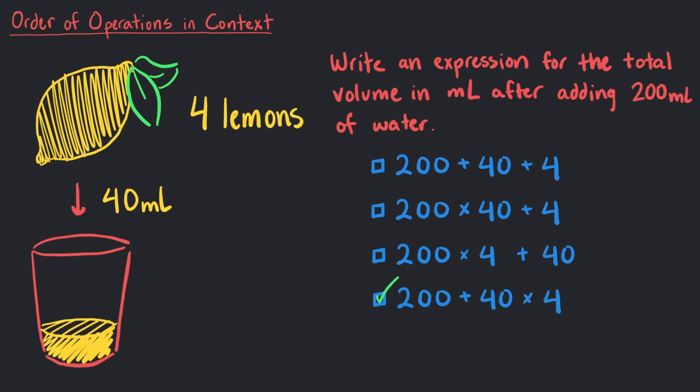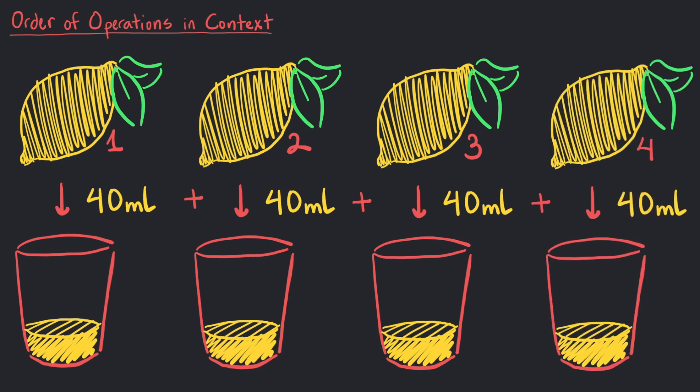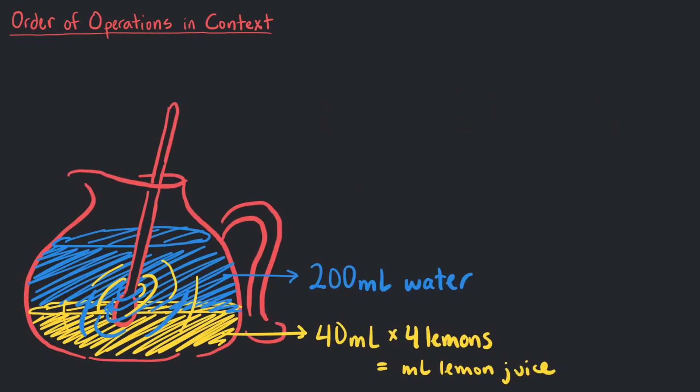That's right, each lemon gives 40 milliliters of juice, so that's 40 milliliters for each of the 4 lemons. 40 milliliters plus 40 milliliters plus 40 milliliters plus 40 milliliters, which is 40 milliliters times 4 lemons. Then we add another 200 milliliters of water. 40 times 4 plus 200 is our expression for volume.